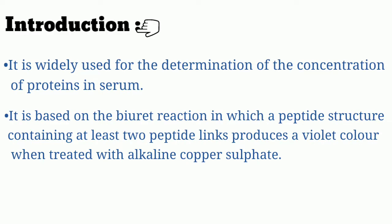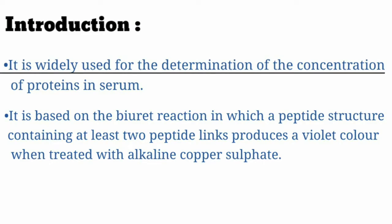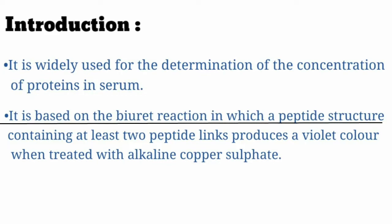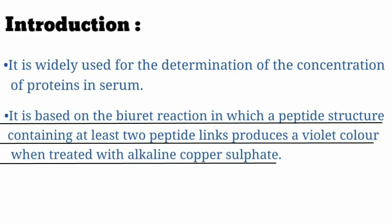Now, introduction to the Biuret method. The Biuret method is widely used for the determination of the concentration of proteins in serum. It is based on the Biuret reaction, in which a peptide structure containing at least two peptide links produces a violet color when treated with alkaline copper sulphate.